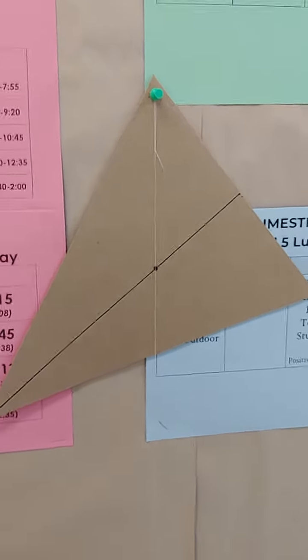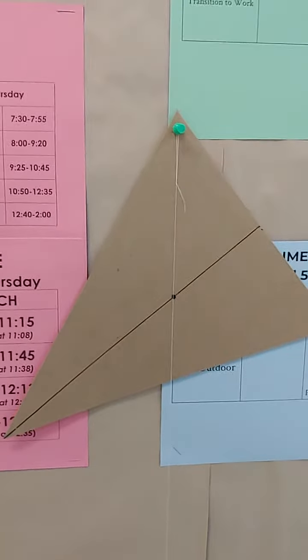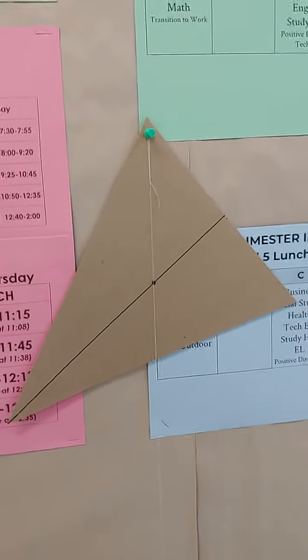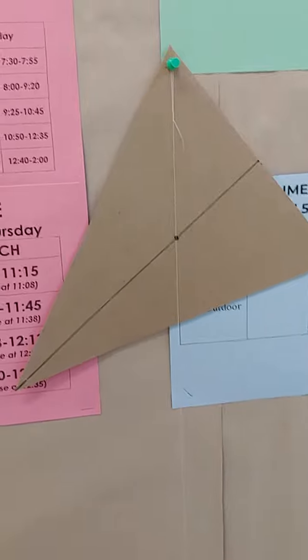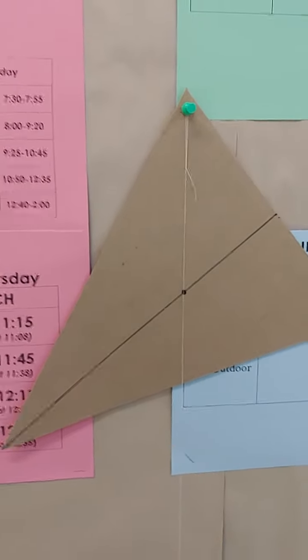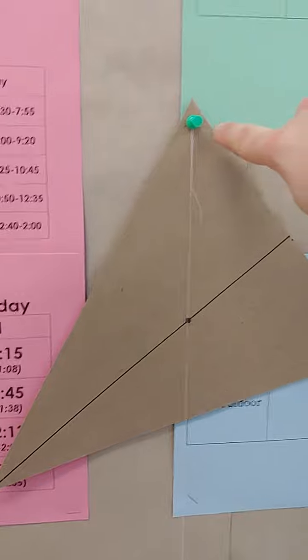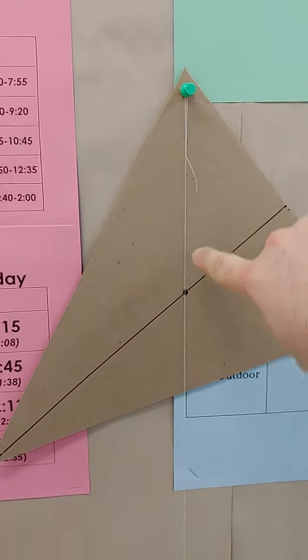All right, so now we've got it hanging from another corner. And so now it's not quite so obvious where the center of mass is going to be, but we'll let it hang for a little bit, let everything stabilize. The center of mass will go right below the point that it's hanging from, and then we can figure out it's got to be somewhere along this line.